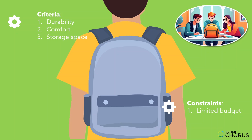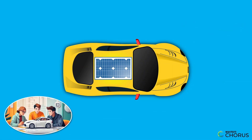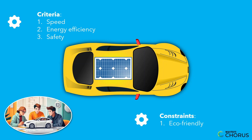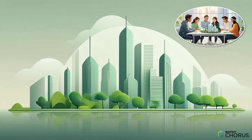Now let's kick it up a notch. Imagine you're designing a solar-powered car. Your criteria include speed, energy efficiency, and safety — but there's a catch. You also need to consider the environmental impact. Can you design a car that's both fast and eco-friendly?